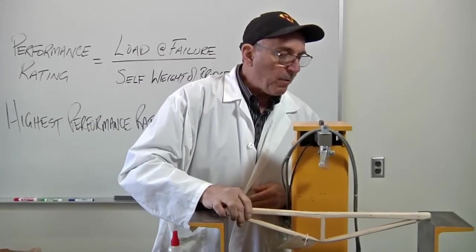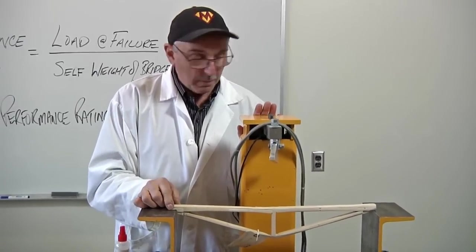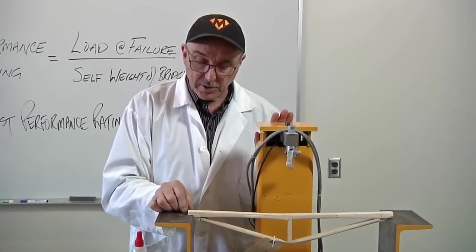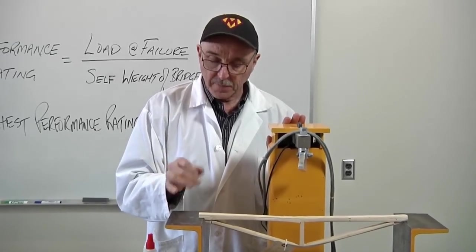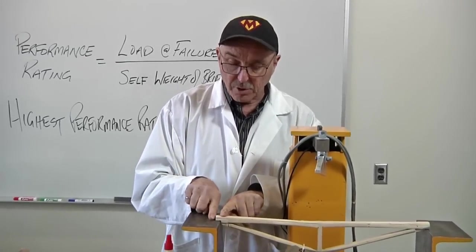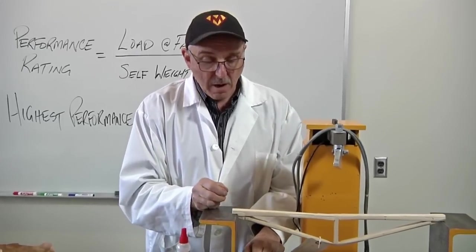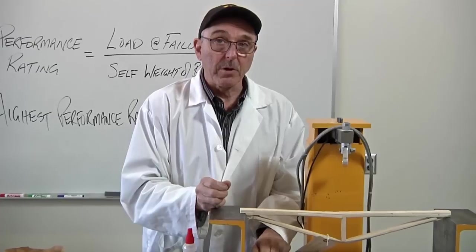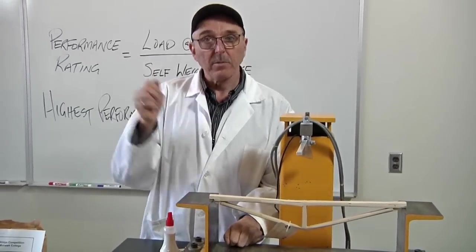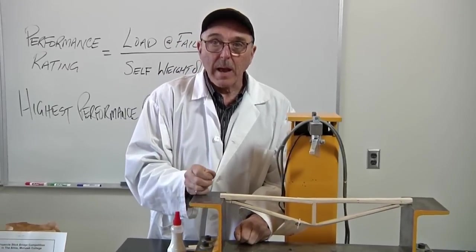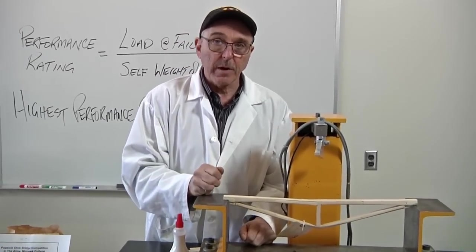Secondly, in that performance rating equation, there is weight involved. And so, what builders have found in the past is one way to save weight is to reduce the amount of support that they have. According to the dimensional rules, you're allowed 25 millimeters of maximum support. But, builders quickly figured out that they didn't need the full 25 millimeters. That they could knock that down, and hence save weight. And in the performance rating equation, without carrying another extra pound of load, if you can reduce your weight, your performance rating is going to go up.